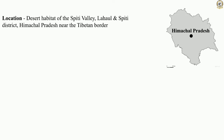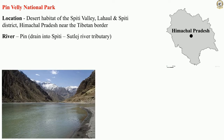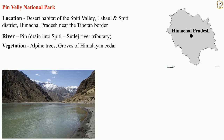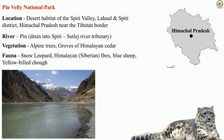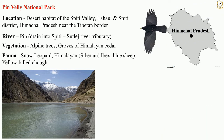Located in the desert habitat of the Spiti Valley, Lahaul and Spiti district, Himachal Pradesh, near the Tibetan border, we have the Pin Valley National Park. The river Pin, which drains into Spiti and is a tributary of the Sutlej, passes through this national park. One can find alpine trees and groves of the Himalayan cedar. The Pin Valley National Park is home to snow leopard, Himalayan or Siberian ibex, blue sheep, and the yellow-billed chough.